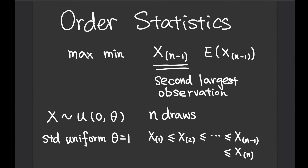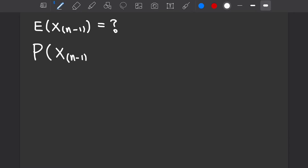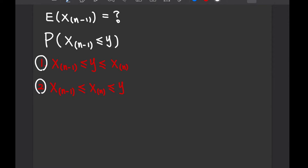Now we are interested in the expectation value of x_(n-1). The first thing to do is to compute the CDF of x_(n-1). The CDF of x_(n-1) is actually slightly trickier than the maximum and minimum cases, because there are two separate scenarios to consider. The first case is that x_(n-1) is smaller or equal to y, which is then smaller or equal to x_(n), the largest observation. The second scenario is that x_(n-1) is smaller or equal to x_(n), which is then smaller or equal to y. If we sum up the probabilities of case 1 and case 2, we get the CDF.